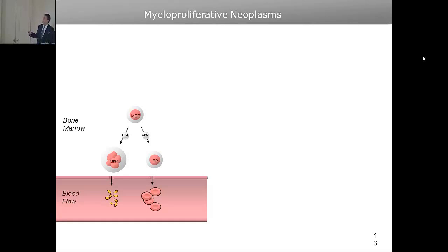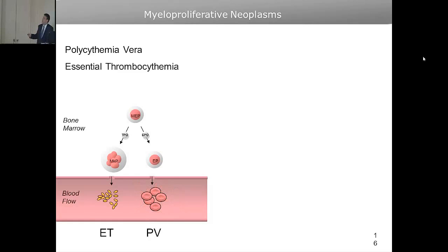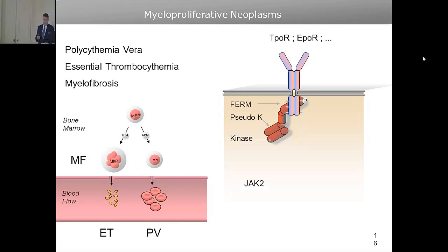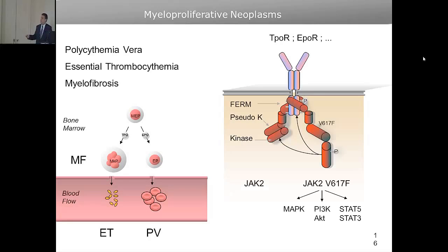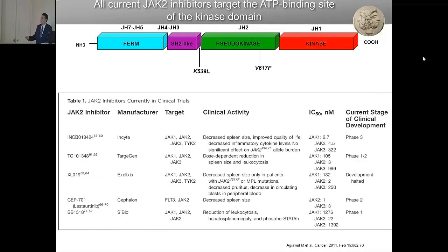The identification of JAK2 V617F led to an effort by industry to produce JAK2 inhibitors and use them in treatment of myeloproliferative neoplasms. There are at least ten molecules in clinical trials, and the first one — the InSight compound, now at Novartis — has been approved by the FDA and EMA and is now approved for myelofibrosis treatment.